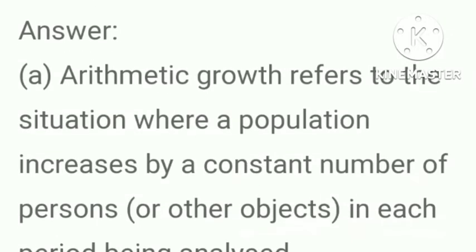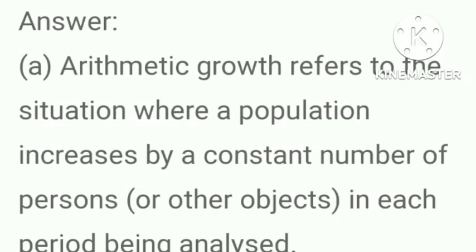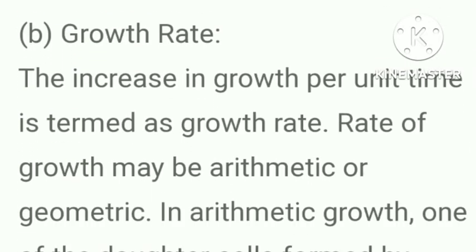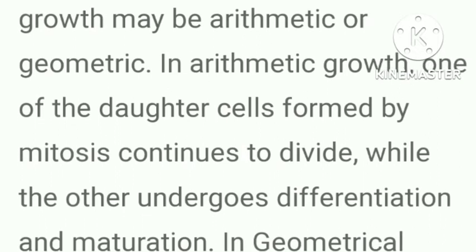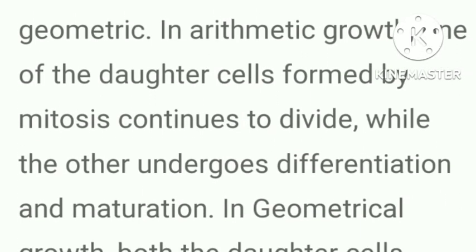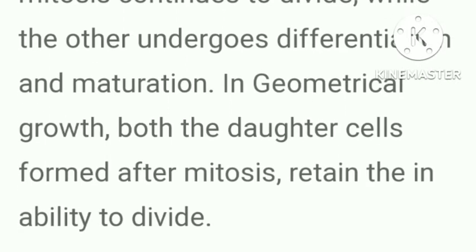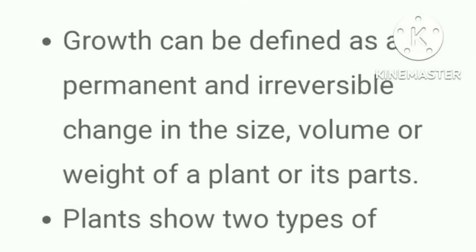Three marks questions: Describe briefly arithmetic growth, geometric growth, sigmoid growth curve, absolute and relative growth rates. Growth rate is the increase in growth per unit time. In arithmetic growth, one of the daughter cells formed by mitosis continues to divide while the other undergoes differentiation and maturation. In geometric growth, both daughter cells formed after mitosis retain the ability to divide.